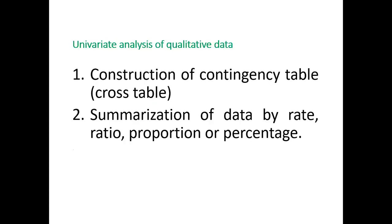First we look at univariate analysis. Univariate analysis of qualitative data involves construction of a contingency table or cross table, and summarization of data by rate, ratio, proportion, or percentage.